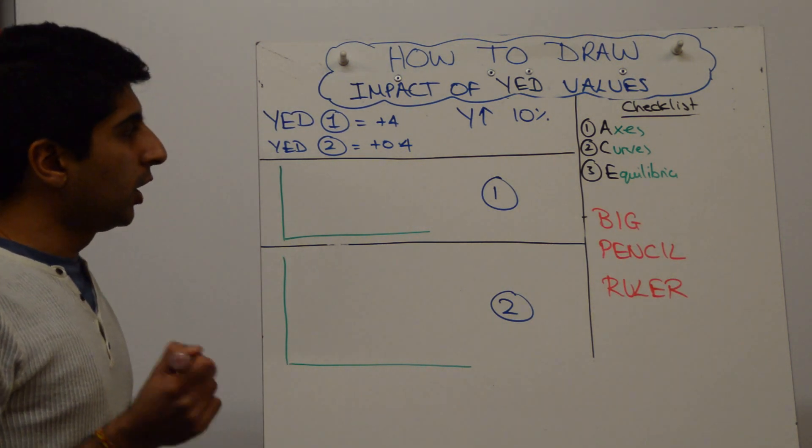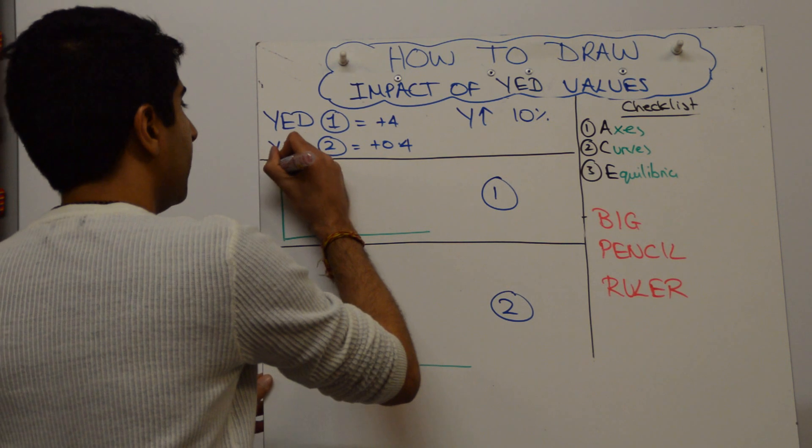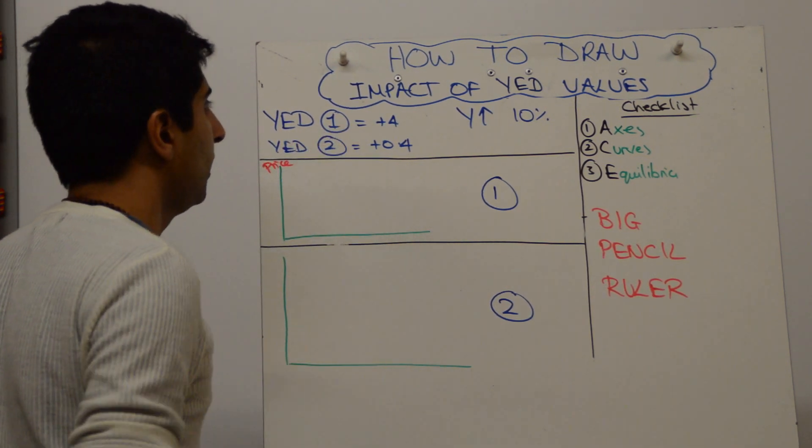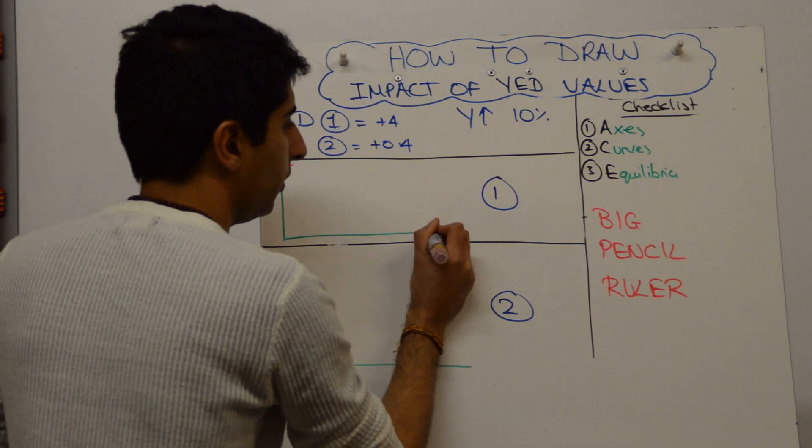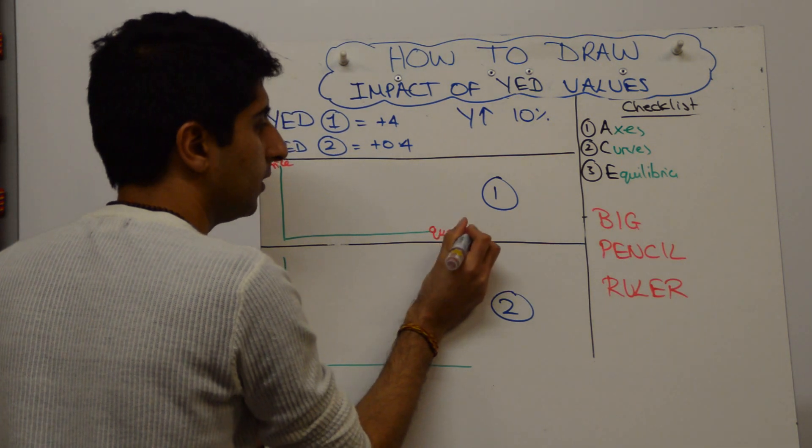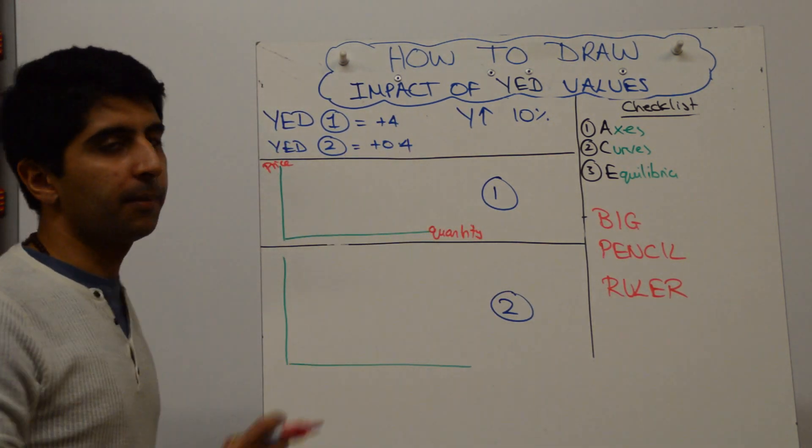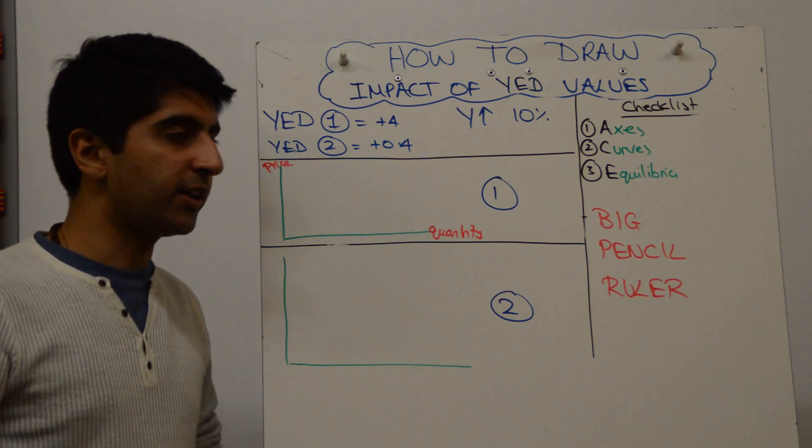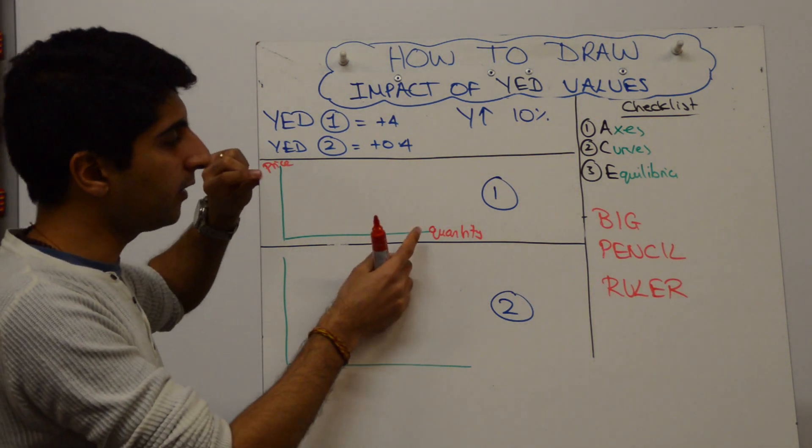Alright, so let's have a look here. Let's say number one first. We know that demand is income elastic, so we want to show a large shift to the right of demand. So how to draw this diagram?